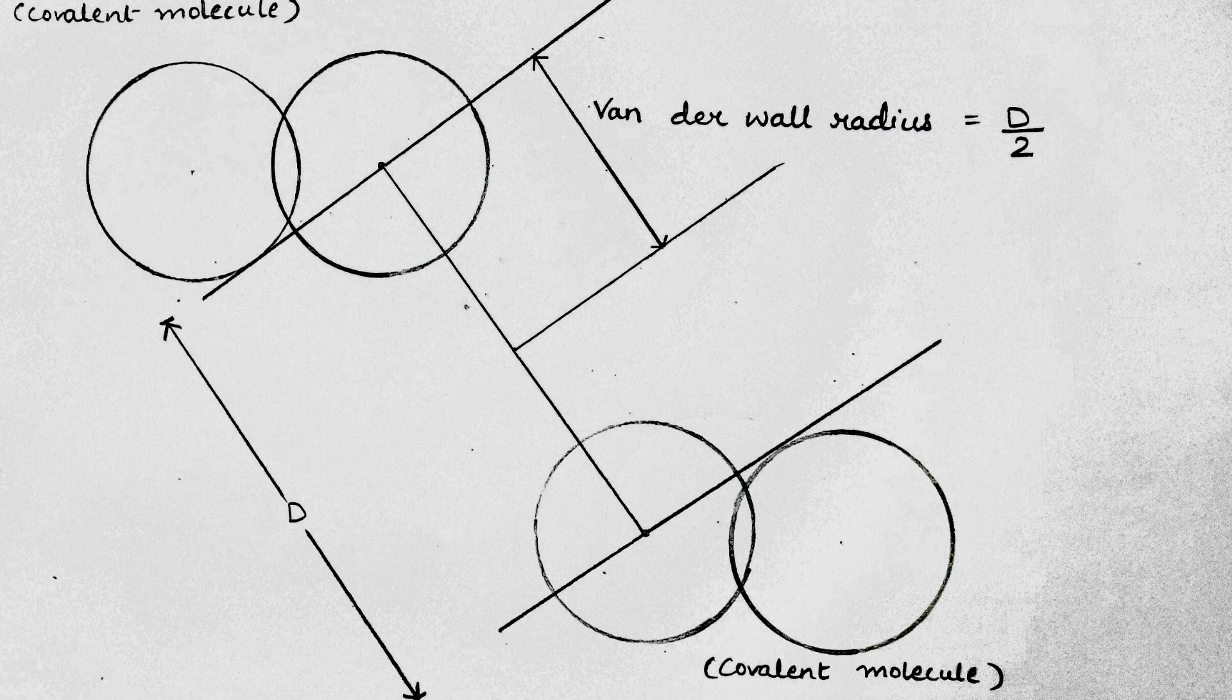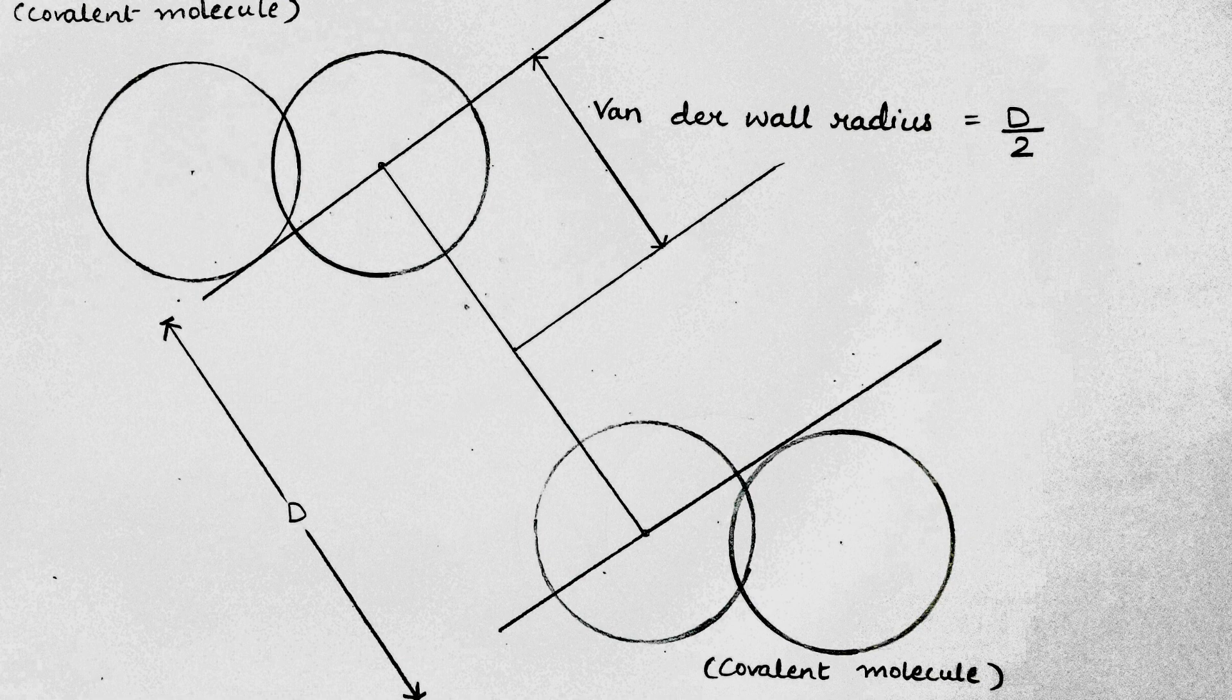In the diagram, you are given two covalent molecules next to each other. These molecules will themselves have their own covalent radius. Then, when does Van der Waal's radius come into play? You can see a distance D given in the diagram. This distance D is the distance between the two similar atoms belonging to these two neighboring molecules in solid state. Hence, the Van der Waal's radius becomes D by 2.